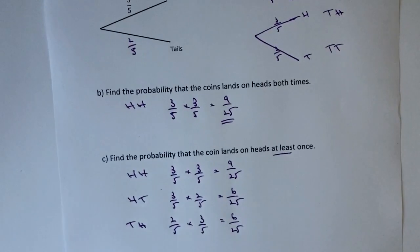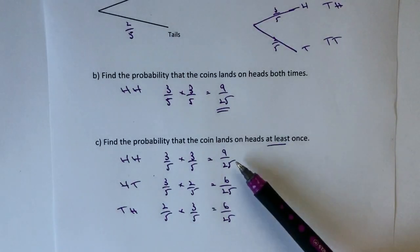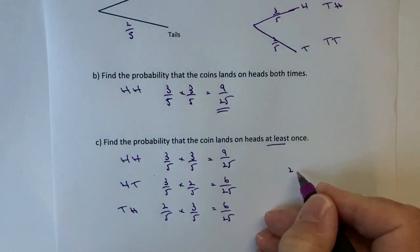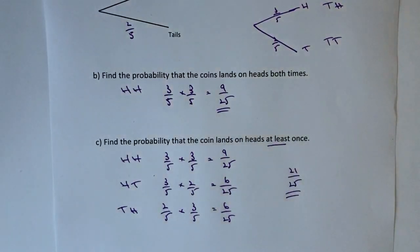Okay, so there we are at the bottom. Therefore, the total probability is going to be the sum is going to be adding up this one, this one and this one. So nine add six, add six is going to be twenty-one. So it'd be twenty-one out of twenty-five would be the answer to that part of the question.